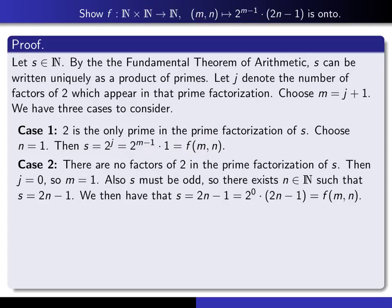So in case 2, there are no factors of 2 at all. And so that means j is equal to 0. And so we've chosen our m to be 1. But since there are no factors of 2, s must be odd. And therefore, we know that there must exist a natural number n such that s is equal to 2n minus 1. So then it follows that s is 2n minus 1, which is the same as 2^0 times (2n-1). This 0 is the same as 1 minus 1. And so this is exactly f(m,n), right? It's f(1,n). And therefore, we've handled case 2 as well.